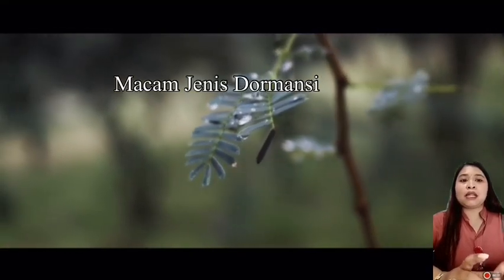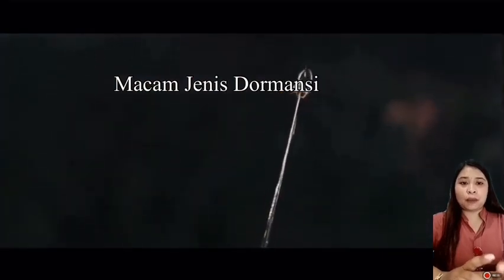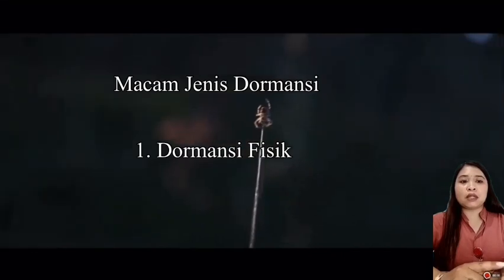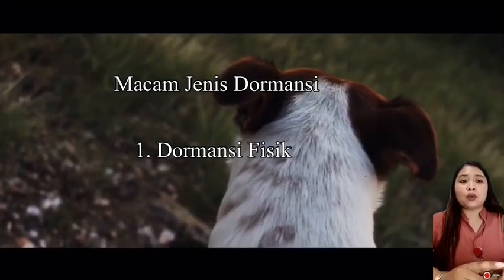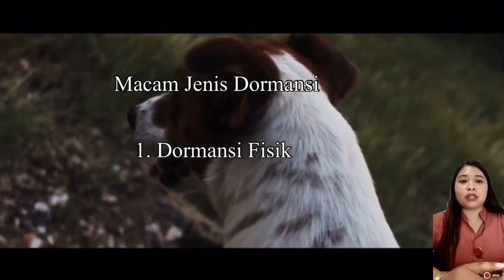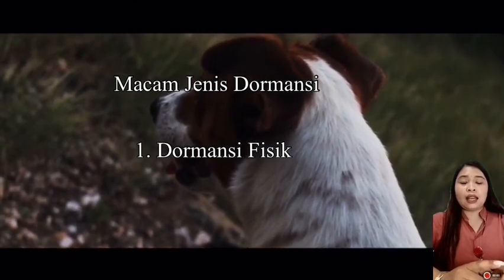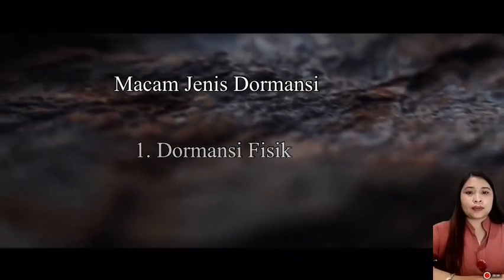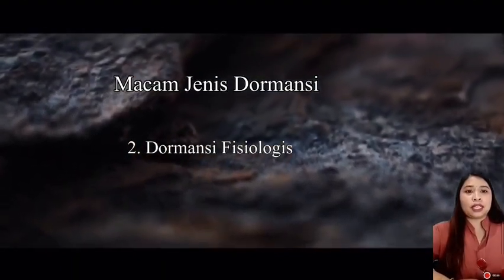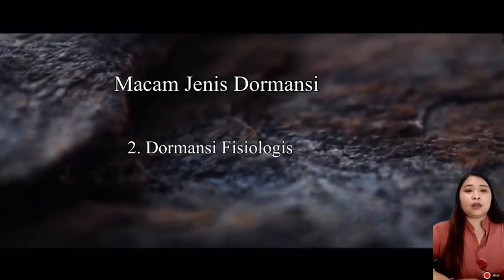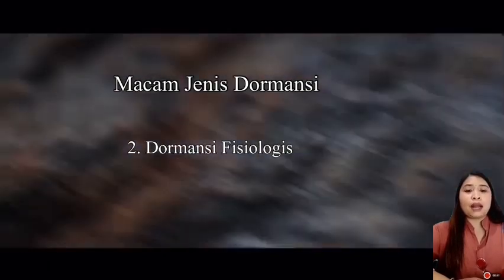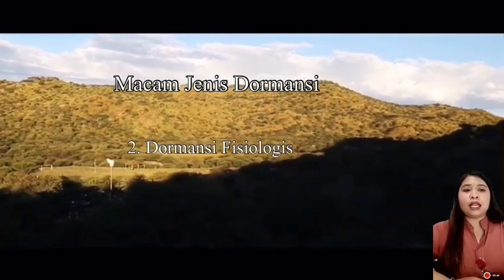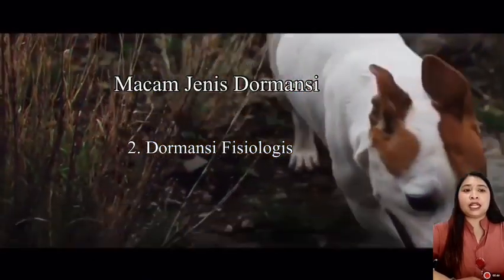Dormansi memiliki beberapa macam jenis. Yang pertama, dormansi fisik. Tipe dormansi ini disebut sebagai benih keras karena kulit bijinya yang cukup kuat untuk menghalangi pertumbuhan embrio. Hal ini disebabkan oleh impermeabilitas kulit biji. Yang kedua, dormansi fisiologis, yang terdiri dari immaturity embryo, yaitu beberapa jenis tanaman mempunyai biji di mana perkembangan embrionya tidak dapat secepat jaringan di sekelilingnya.